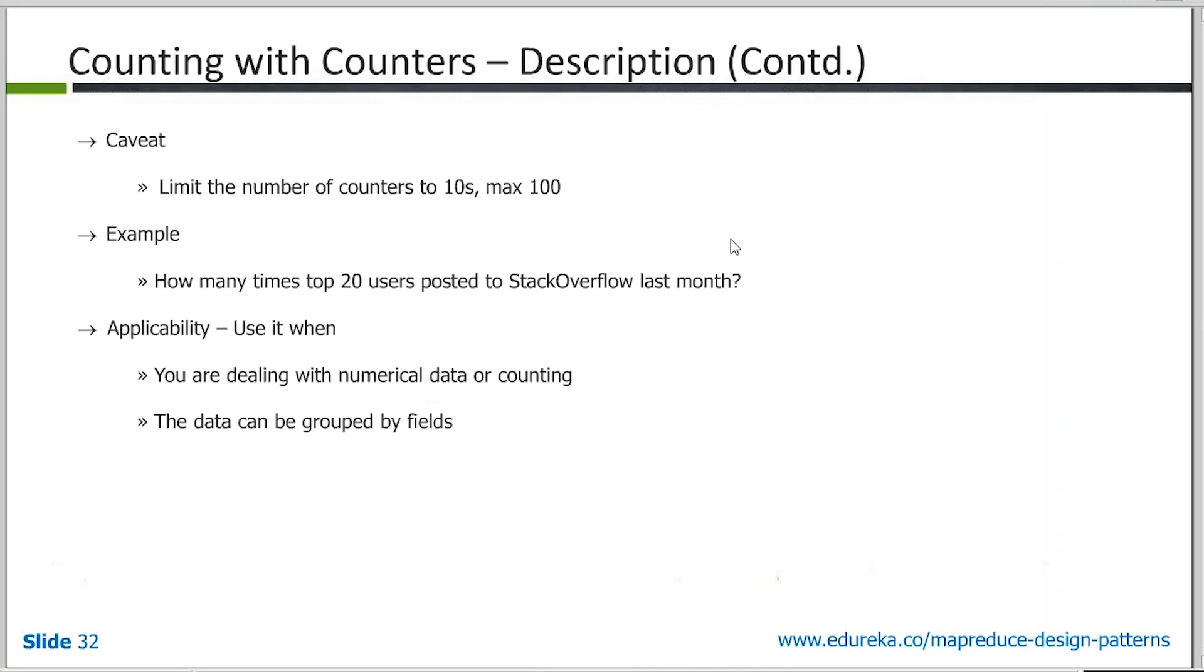There's a caveat to using these counters. You cannot be using too many counters in your program because it's being managed. For example, if you are talking about MapReduce version 1, the job tracker is responsible for keeping track of those counters, and it has got other jobs to perform. If you increase the number of counters to a lot, then the performance of your whole system starts to get affected.